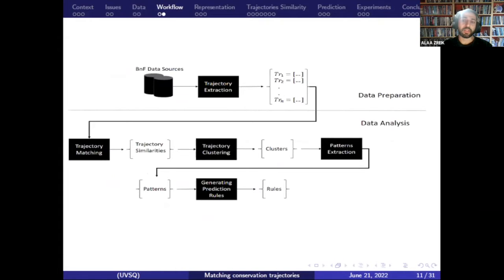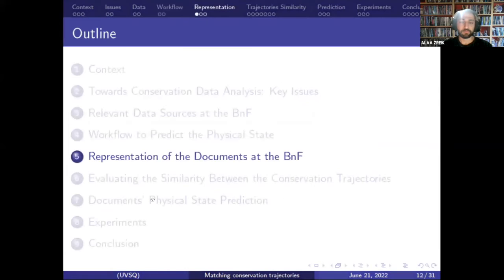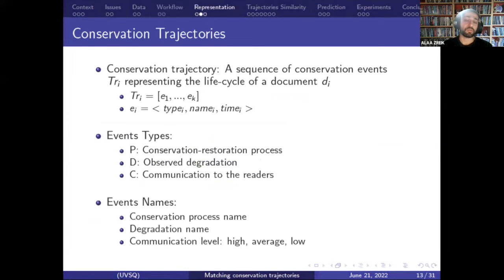To predict the physical state of documents, the analysis process contains different phases. The work starts by the extraction of conservation trajectories from the BNF databases, so each document is represented by a trajectory that represents its conservation history. After that, the similarity between trajectories is computed and they are grouped to extract clusters containing similar trajectories. Patterns are extracted from the clusters and used to create prediction rules.